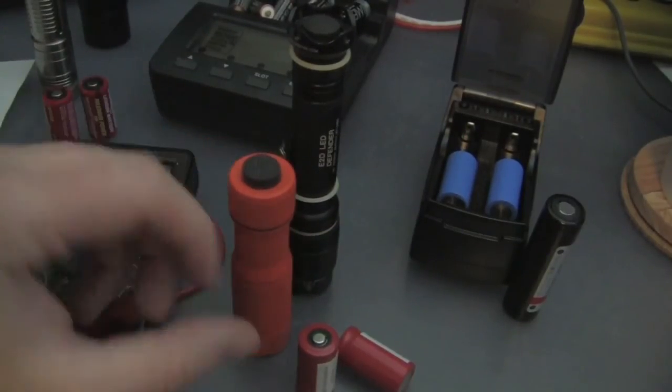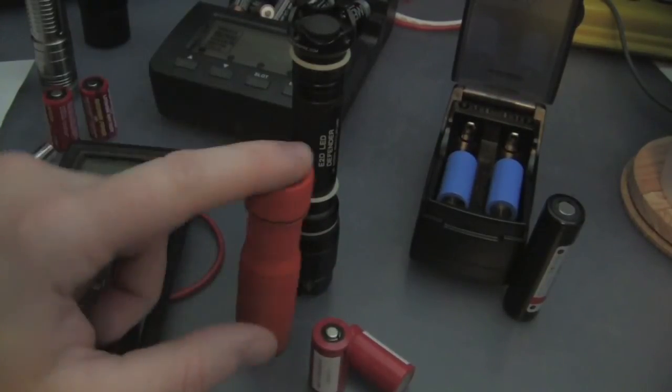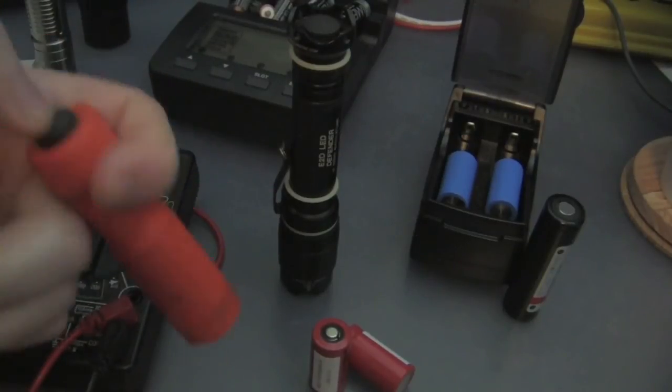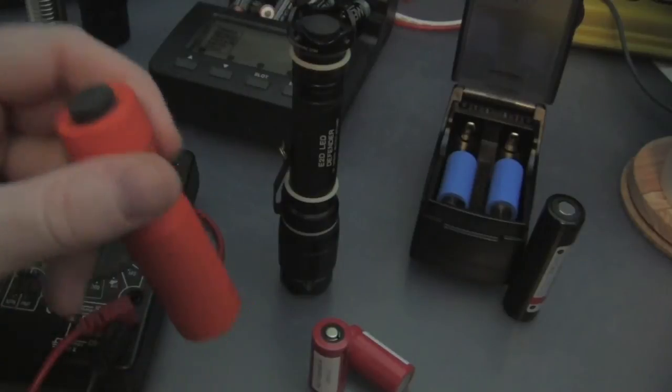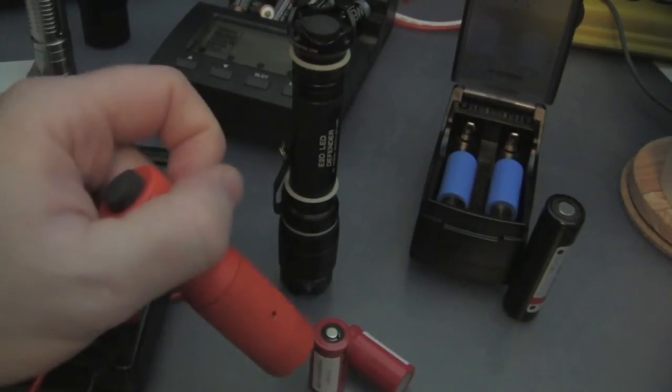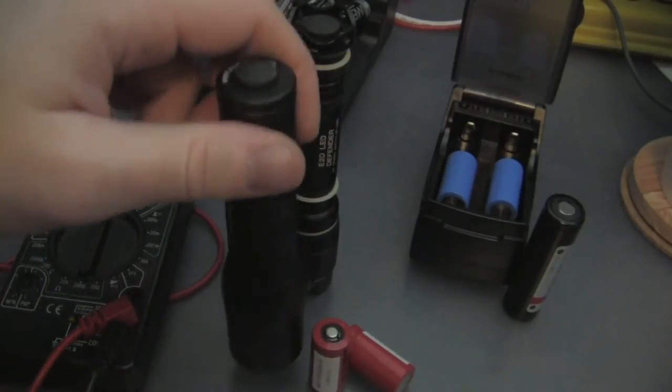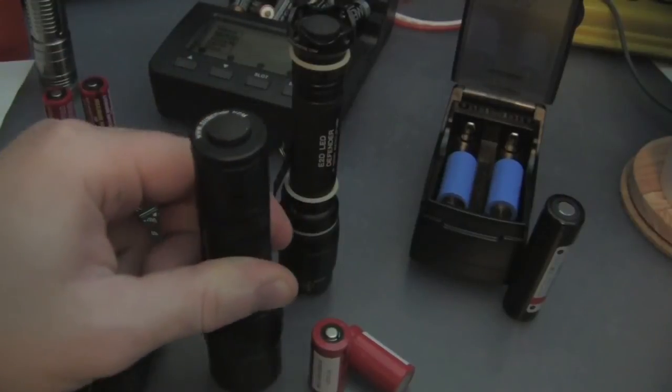If your flashlight specifically says go ahead and use IMR 16430s, that's cool. This flashlight is super advanced. It has protection built in. It can detect the type of battery you're using and it will shut down before the battery protection circuit kicks in. If the flashlight says do not use rechargeable batteries, do not use rechargeable batteries.